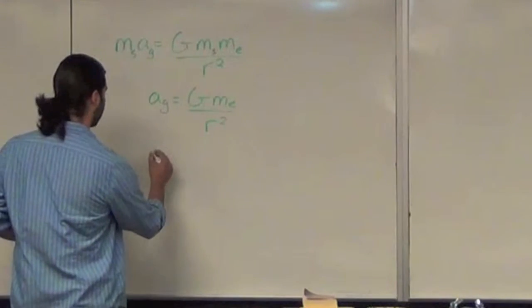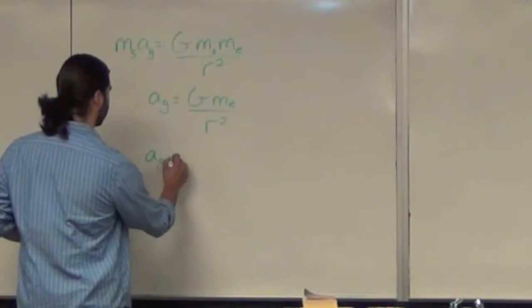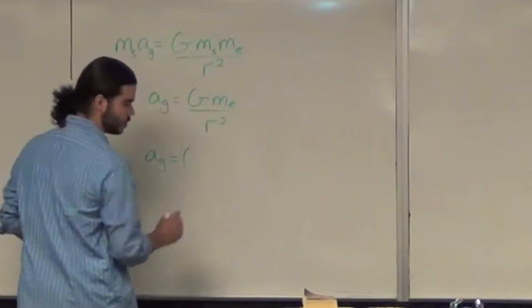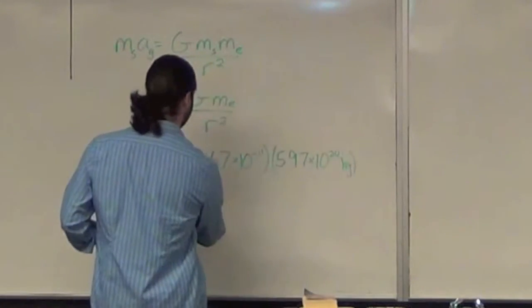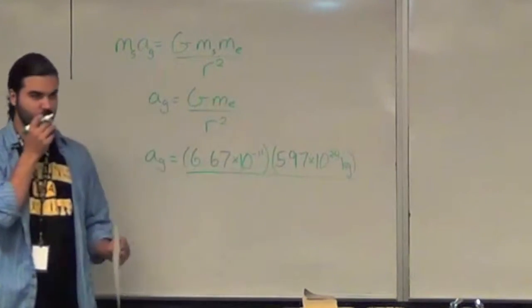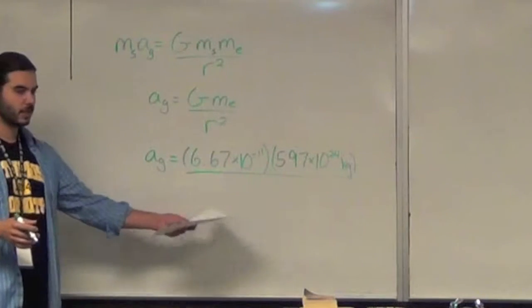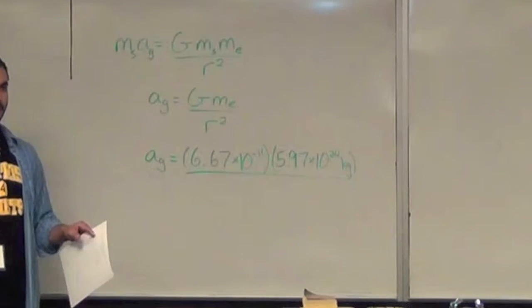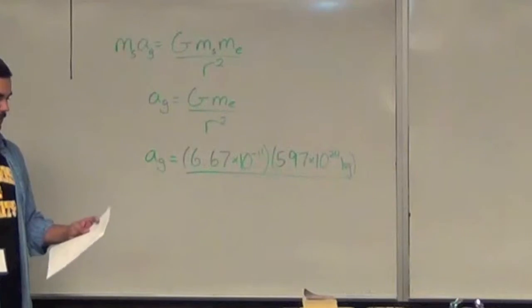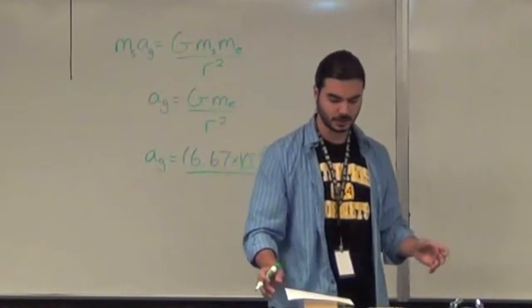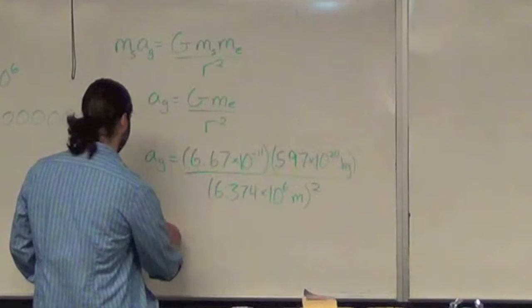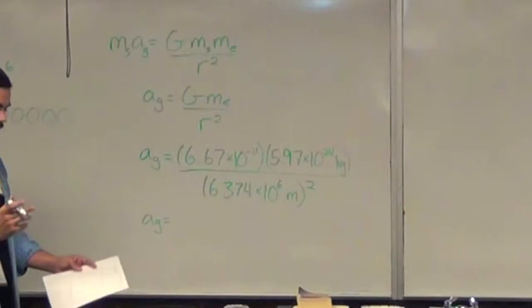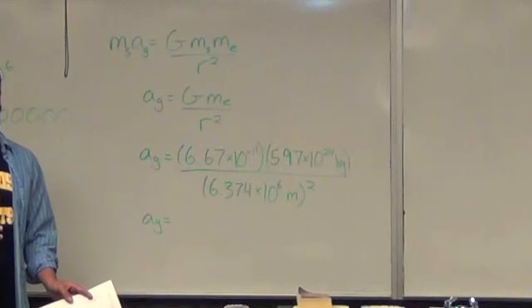We're trying to find acceleration due to gravity. So, that's equal to G times the mass of the Earth divided by the distance. Now, the distance we need to plug in here is the radius of the Earth plus 250 miles. Let's do this in meters. We need to do this in meters, squared. If you do that calculation, I already did it. It is 8.7 meters per second squared.